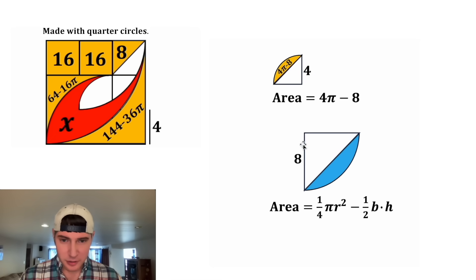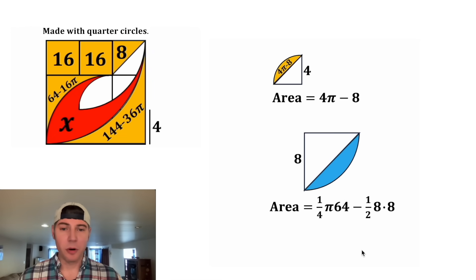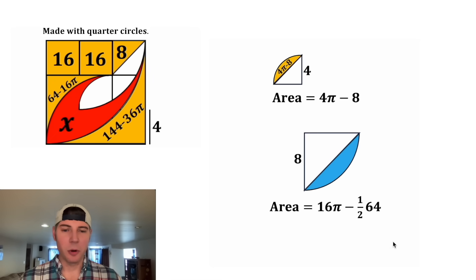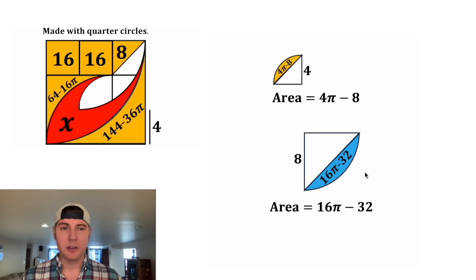And then for this one down here, the radius of the quarter circle is equal to 8, and the base and height of this triangle are both equal to 8. 8 squared is equal to 64, and one-fourth of 64 is 16. And 8 times 8 is 64, and one-half of 64 is 32. So the area of this region is equal to 16π minus 32. Let's color that orange.